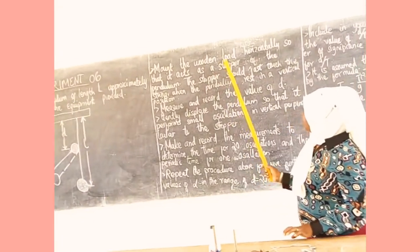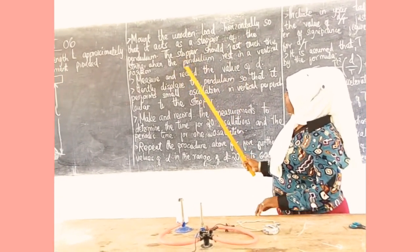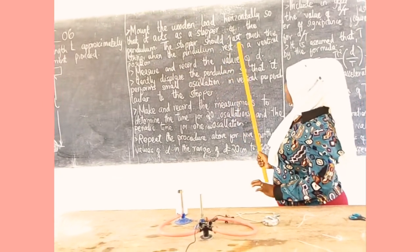Mount the wooden rods horizontally so that it acts as the stopper of the pendulum. The stopper should just touch the string when the pendulum rests on the vertical position.